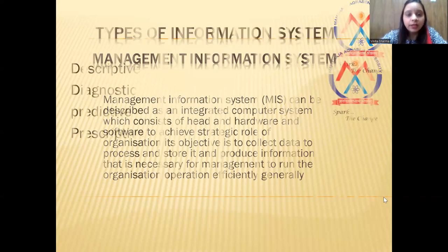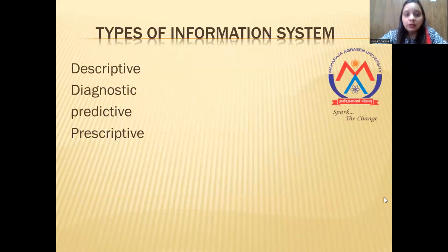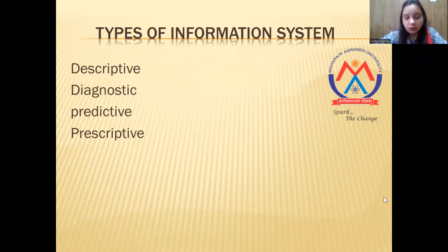There are types of the information system. There are basically four types of information system in which we can store our information for any organization or any institute. First, it is descriptive, diagnostic, predictive, and prospective.